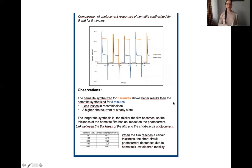We compare those results with the literature and we realize that there is actually a link between the time of the electrodeposition reaction, so the thickness of the film, and the efficiency of the material. When the film reaches a certain thickness, the photocurrent decreases due to hematite's low electron or charge carrier mobility. For the eight minute one, we reach a thickness that was too important to get good efficiency.